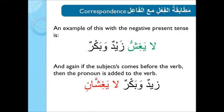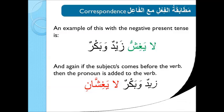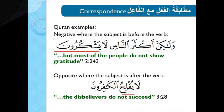An example of this with the negative present tense verb is لَا يَغْشَى زَيْدٌ وَبَكْرٌ. And again, if the subject comes before the verb, then the pronoun is added to the verb: زَيْدٌ وَبَكْرٌ لَا يَغْشَيَانِ.